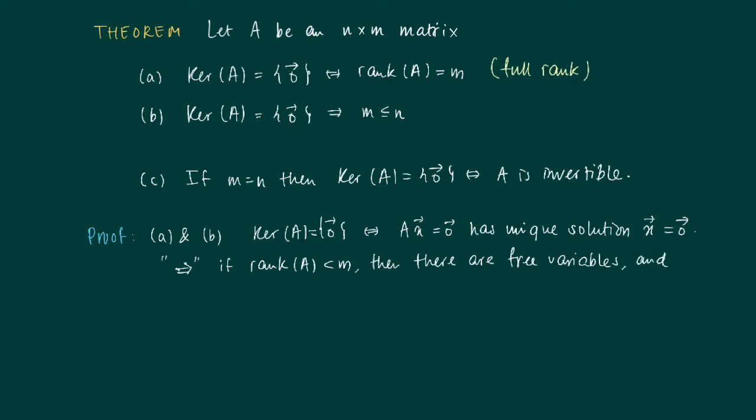Not each column gets a pivot, so the non-pivotal columns represent the free variables. Since we have a consistent system, we always have infinitely many solutions.